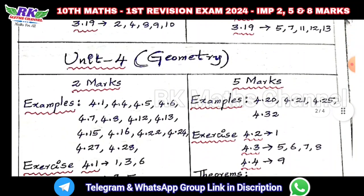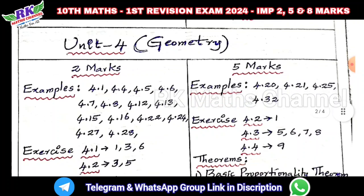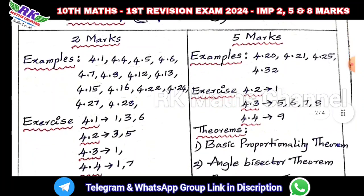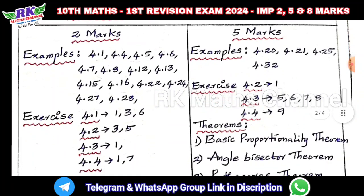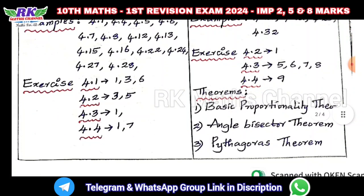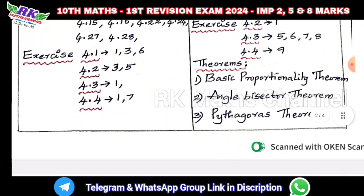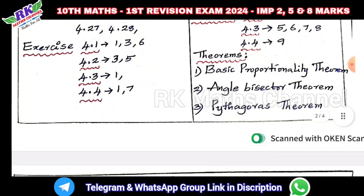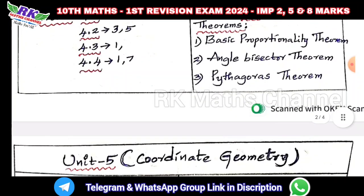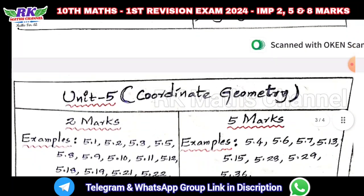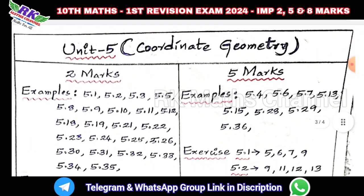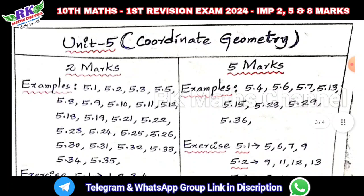Fourth unit — Geometry. Important questions, 5 mark. The theorem practice is important. Half real example — the list and links are in the description.